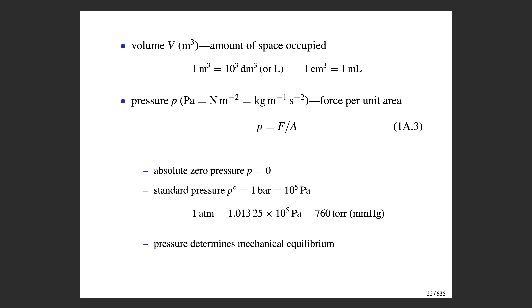Breaking newtons into base units gives kilograms times meters per second squared, so one Pascal equals one kilogram per meter per second squared. When talking about absolute pressures, you would report that as p equals zero rather than p equals zero pascals.